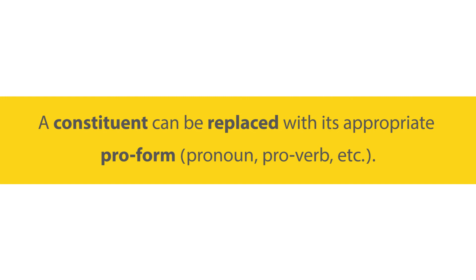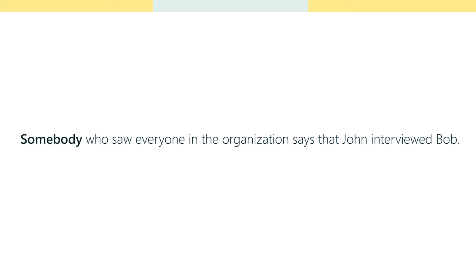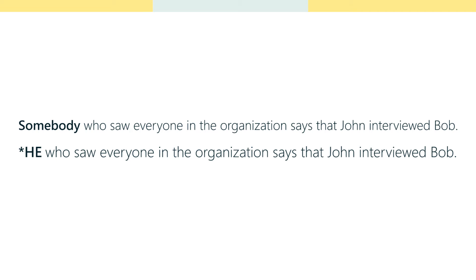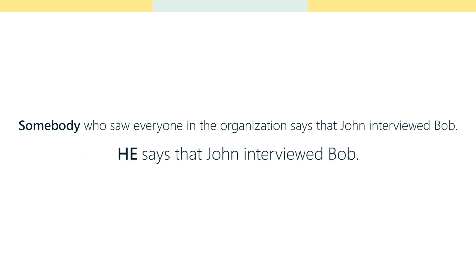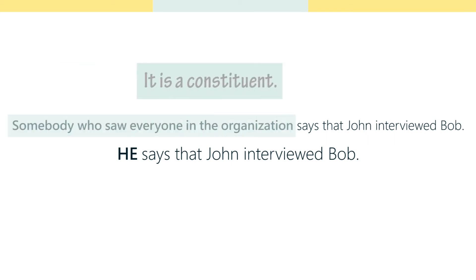For example, consider the sentence: 'Somebody who saw everyone in the organization says that John interviewed Bob.' I want to know if 'somebody' is a constituent — it is a noun phrase here. You can replace it with a pro-form, in this case a pronoun: 'he' or 'she.' So 'He who saw everyone in the organization says that John interviewed Bob' feels a bit odd, but 'He says that John interviewed Bob' shows that 'somebody who saw everyone in the organization' is a constituent, because as a noun phrase it can be replaced with a pronoun.